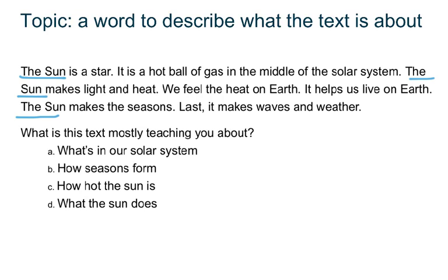The passage is mostly talking about the sun. It repeats the phrase 'the sun' lots of times. Each sentence tells you more about the sun. Now that I know the topic, I'm ready to answer the question: what is the text mostly teaching you about? The correct answer will include the topic of the text.